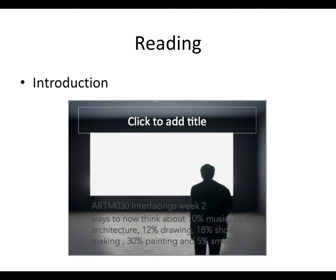So, to the reading — what is Intermediality? The following quote hopefully explains. Intermediality is about 10% music, 25% architecture, 12% drawing, 18% shoemaking, 32% painting, and 5% smell. This is from the primary reading for this week: Jill Bennett's article, 'The Aesthetics of Intermediality.'